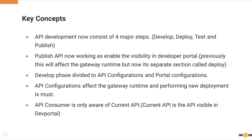With the introduction of the revision feature, there are now four major steps to API development: develop, deploy, test, and publish. Previously, deploy and publish were considered as a single functionality. Also, the development phase is now divided into two categories: API configuration section and portal configuration section. This separation provides the API developer the ability to distinguish which changes affect the runtime deployment and which changes do not affect the runtime.